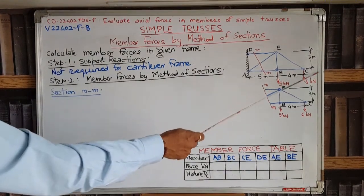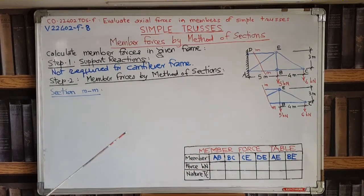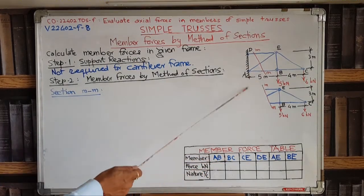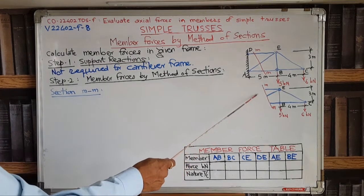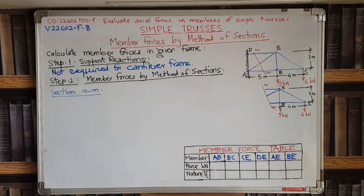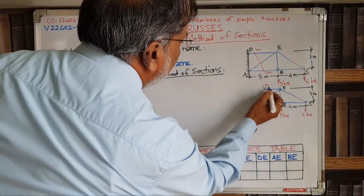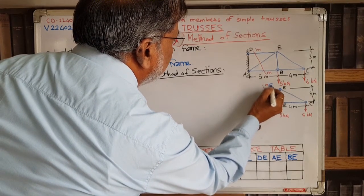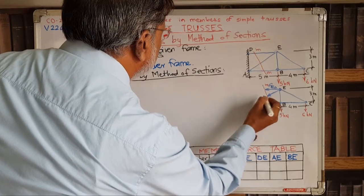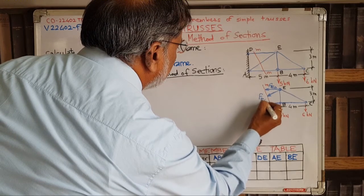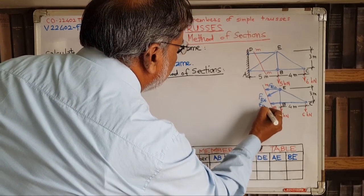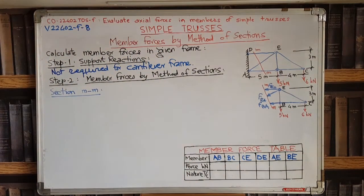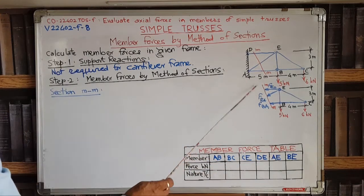Because the entire frame was in equilibrium, every part of the frame must also be in equilibrium, so we can apply conditions of equilibrium to the right portion. Looking at the cut members: for member ED, direction is unknown so we assume it acts away from the joint — this is F_ED. Similarly, F_EA is assumed away, and F_BA is assumed acting away from joint B. We now have a complete free body diagram of the right-side part of the frame.